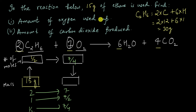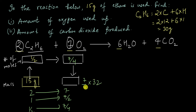To find the amount of oxygen used, we convert the number of moles into mass. The mass of 7/4 moles of oxygen is 7/4 times the molar mass of oxygen, which is 32 (since O₂ has two atoms: 16 + 16 = 32). This gives 7 × 8 = 56 grams. So 56 grams of oxygen must have been used.